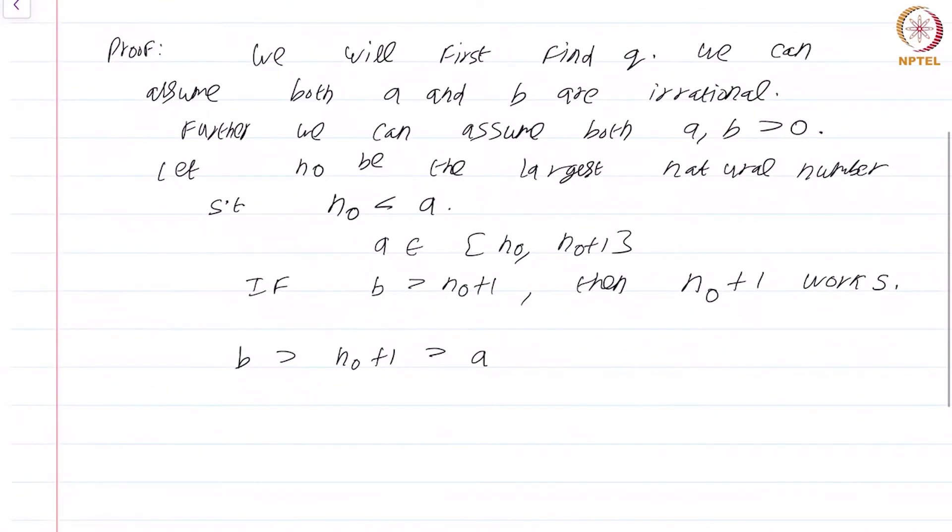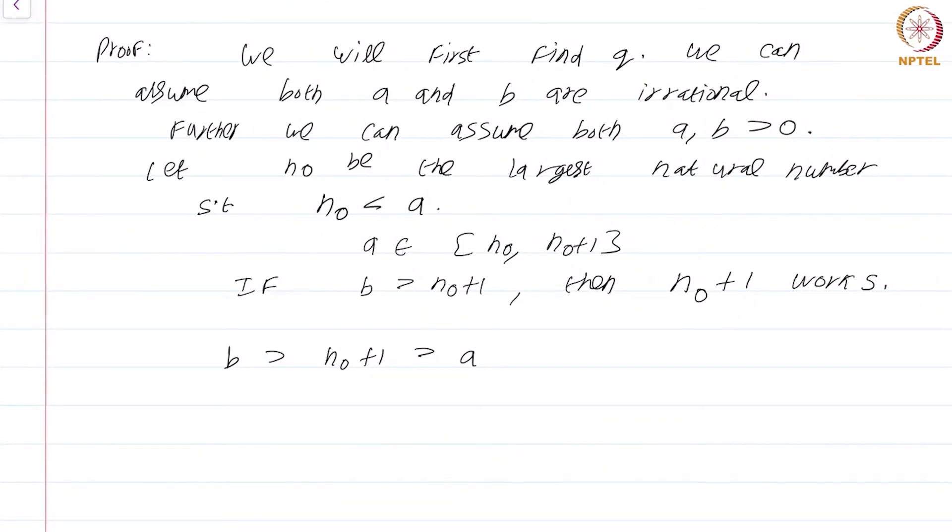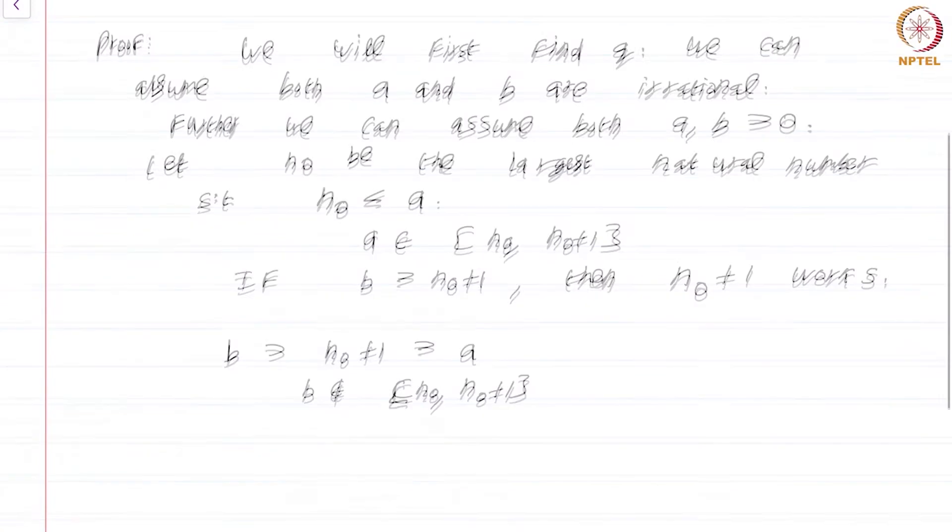So we have found a natural number that lies between a and b. So we are done. So we can assume that b is in the interval (n₀, n₀+1).